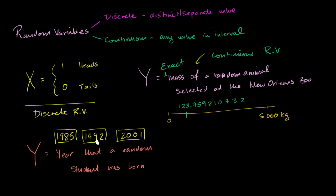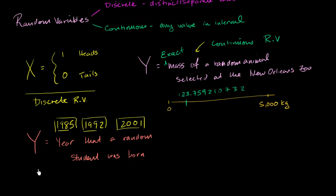It won't be able to take on any value between, say, 2000 and 2001. It will either be 2000, or 2001, or 2002. You can count the values it can take on. This is a discrete random variable — and the coin flip variable X over there is also a discrete random variable. Most of the time when dealing with a discrete random variable you'll have a finite number of values, but it does not have to be finite.